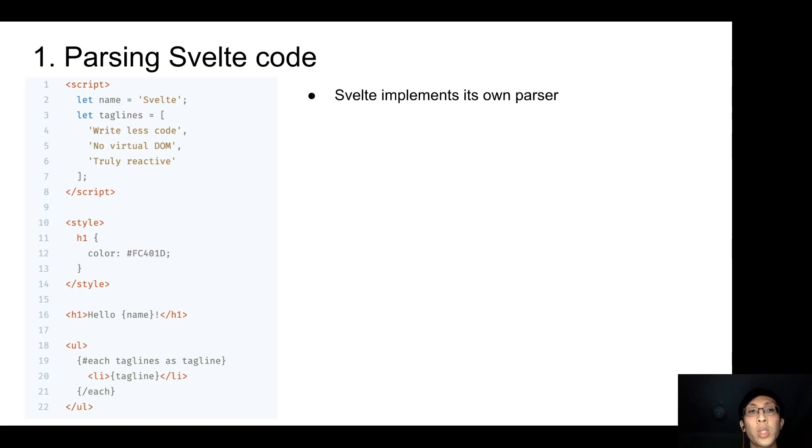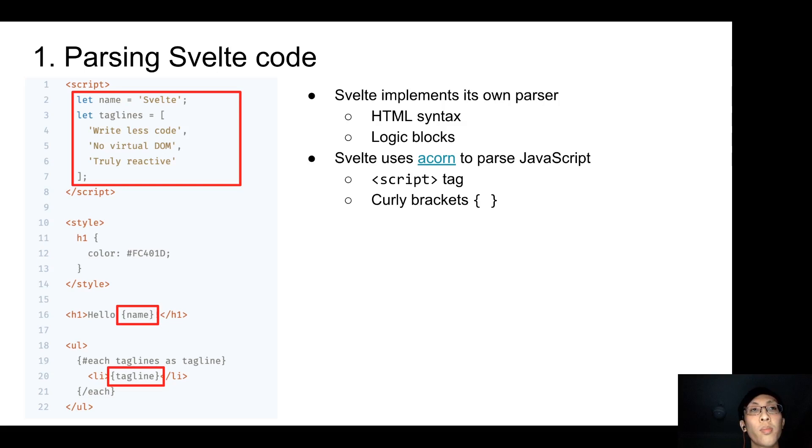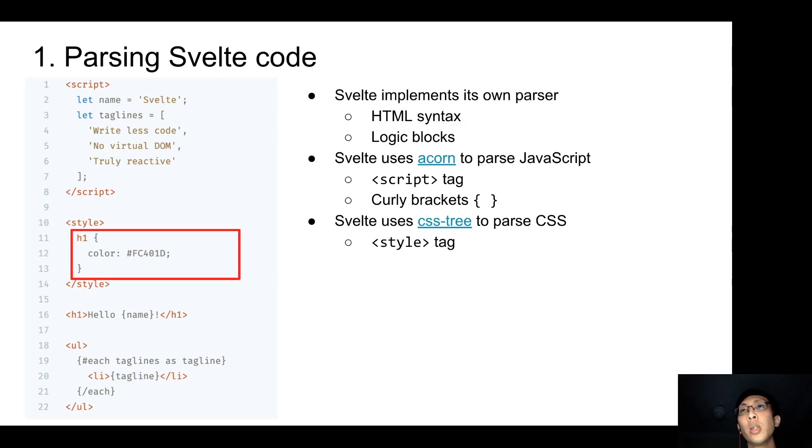Svelte implements its own parser which handles HTML syntax as well as logic blocks like each, if and await. And because JavaScript is fairly a complex language, when Svelte encounters a script tag or curly brackets, it'll hand over to Acorn, a JavaScript parser to parse the content and then when Acorn finishes, it will pass it back to Svelte. The same thing goes with CSS as well. Svelte uses CSS-tree to parse CSS content in between the style tag.